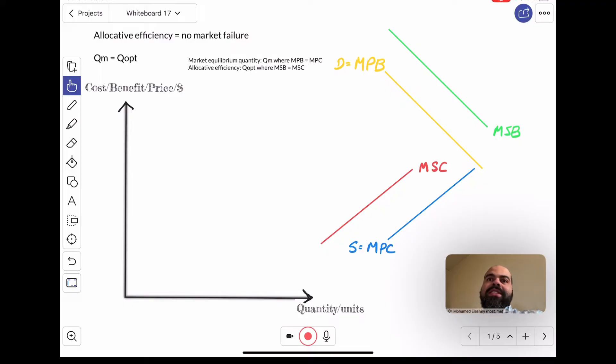I want you to remember that allocative efficiency happens when there is no market failure. It happens when the quantity that is produced by the market, qm, is equal to the socially optimum quantity, qopt. When qm equals qopt, the market has not failed—the market has achieved allocative efficiency.